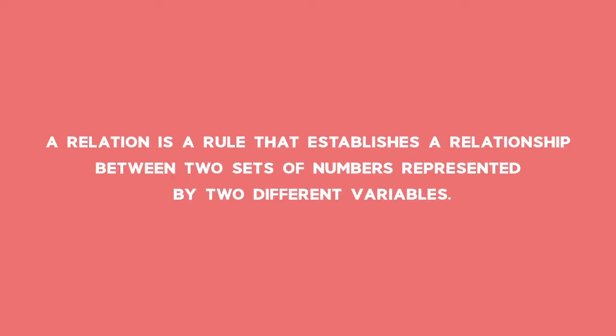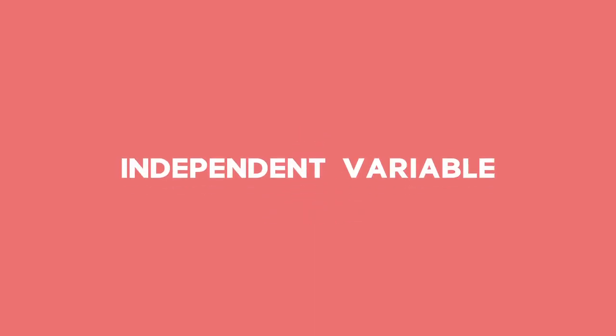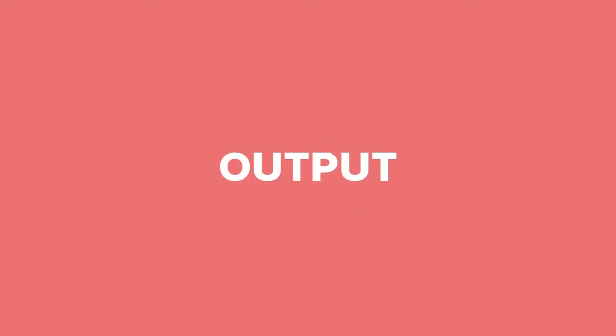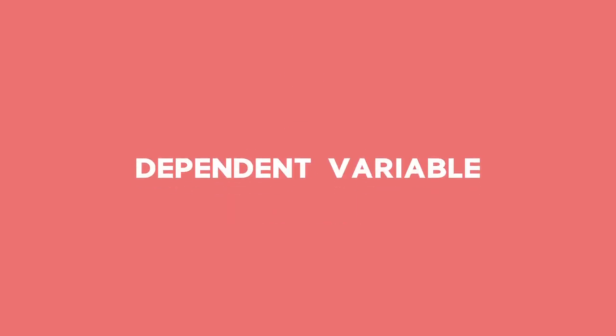A relation is a rule that establishes a relationship between two sets of numbers represented by two different variables. The first set of numbers in a relation are called the inputs and are usually represented by the letter X — this is the independent variable. The second set of numbers are called the outputs and are usually represented by the letter Y — this is called the dependent variable.